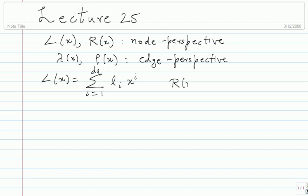And R(x) was written similarly as summation j equals 1 to d_R of R_j times x to the power j. The important parameter is the rate of the code, which is just a function of L_i and R_j.